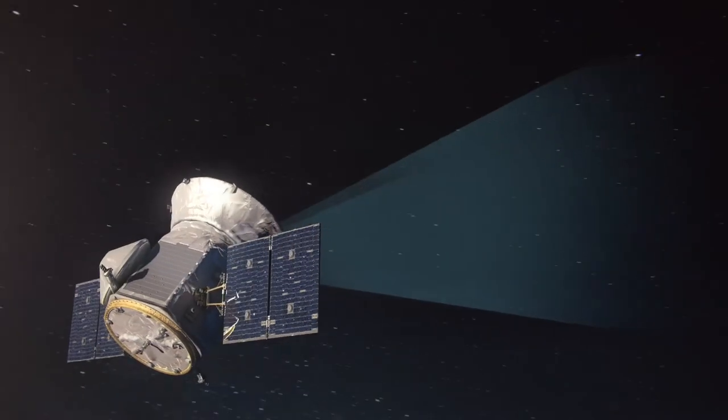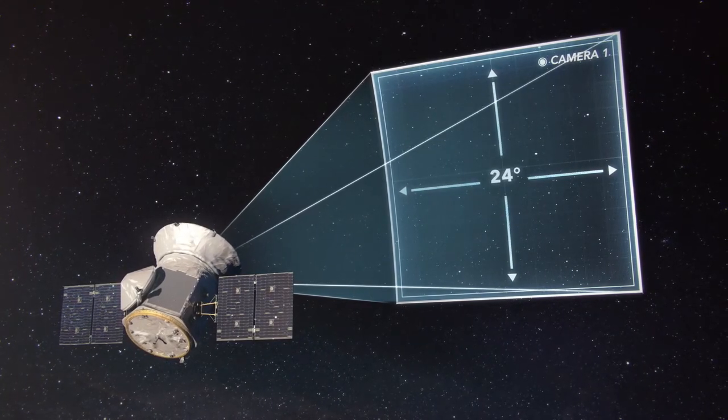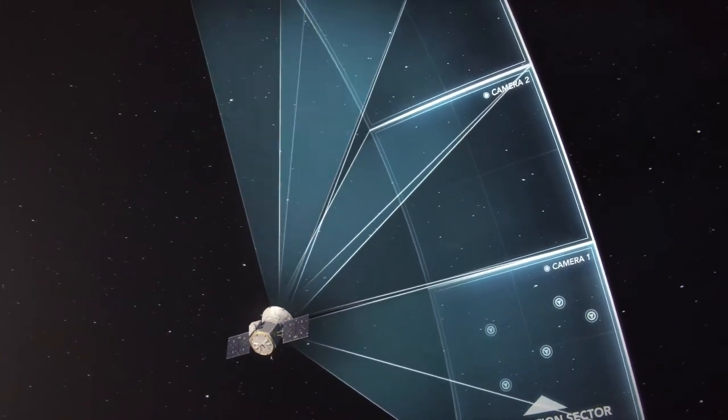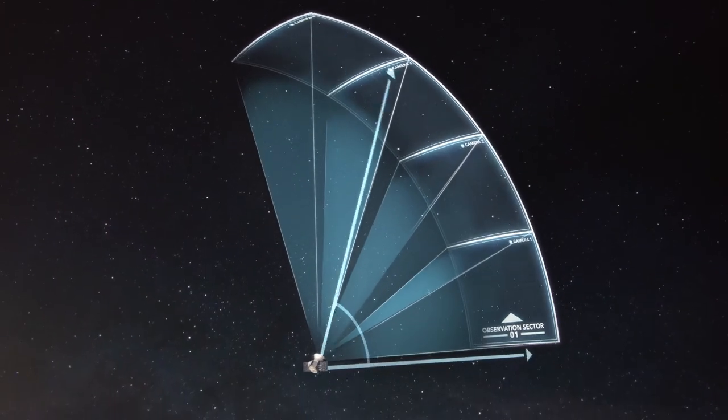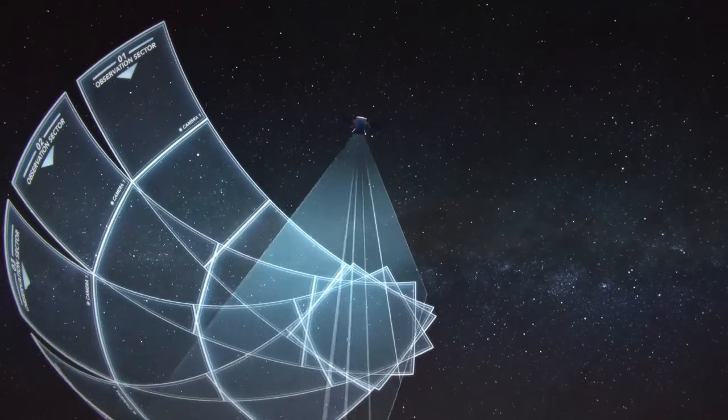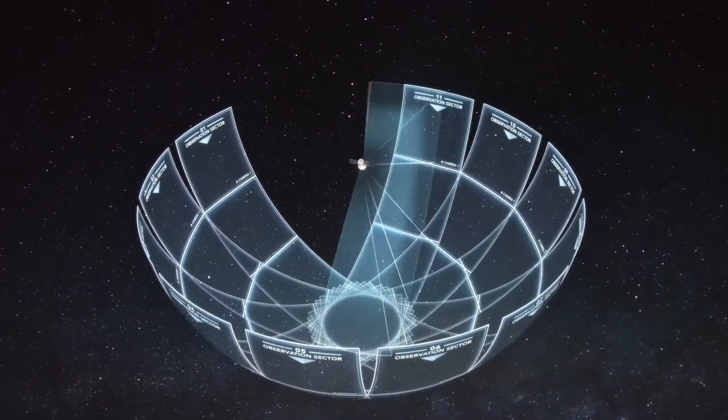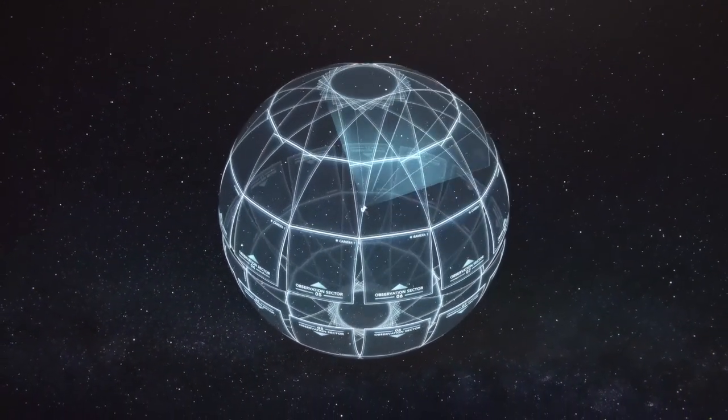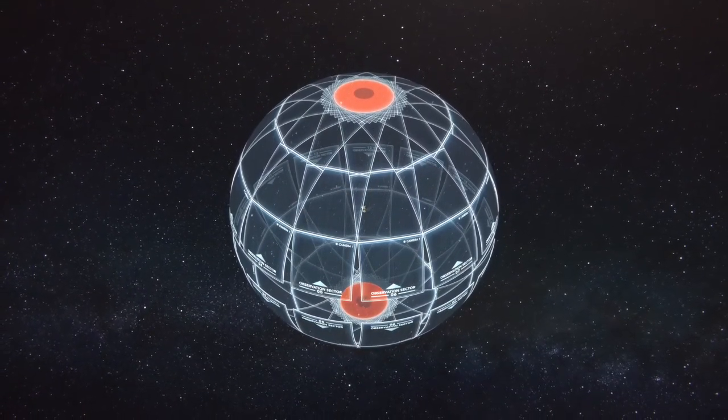TESS operates in a novel highly elliptical Earth orbit. Its mission is to survey the 200,000 brightest G, K and M stars near Earth to find orbiting exoplanets. The observation area is 400 times larger than the one covered by the Kepler mission. In August 2018, TESS started to observe 85% of the sky with its array of wide-field CCD cameras. TESS can study the mass, size, density and orbit of a large cohort of small planets. This also includes samples of rocky planets in the habitable zones of their host stars.